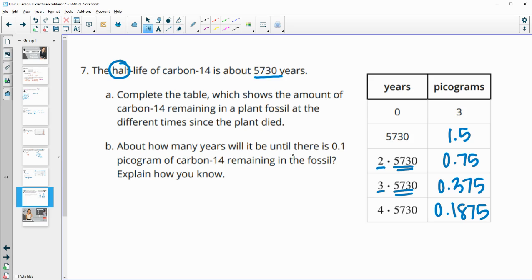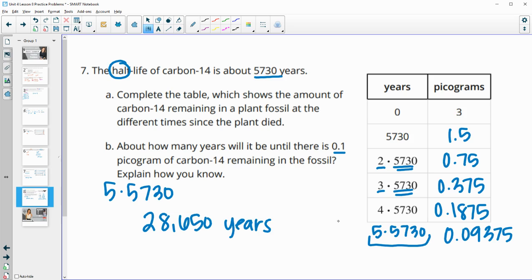So part B says, after how many years will there be 0.1 picogram of carbon-14 remaining? So we see in this fourth half-life that we're at 0.18. So we need to go again. So now we're going to do a fifth half-life. So divide by two again and we'll get 0.09375. So this is when it hits about 0.1 after five half-lives. So five times 5,730 would be the number of years. So this is 28,650 years until it gets to 0.1 picograms.